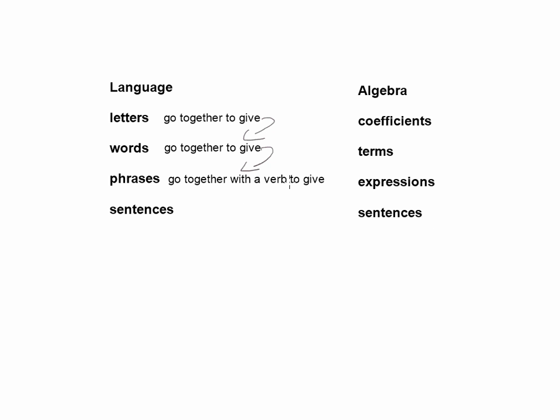And phrases in the English language go together with a verb to give you sentences, such as this one: 'The boy rode his bike to the store.' So you have a phrase and you have your verb there.